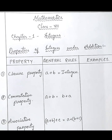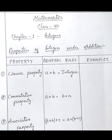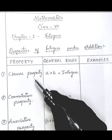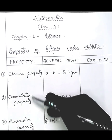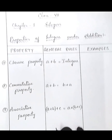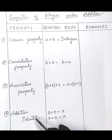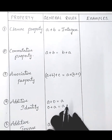Hi everyone, welcome to my YouTube channel 'Scroll to Learn.' If you have not subscribed to this channel, please subscribe and share with your friends and family. In this video we are going to learn about properties of integers under addition. Under addition we have five properties: closure property, commutative property, associative property, additive identity, and additive inverse.